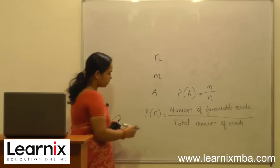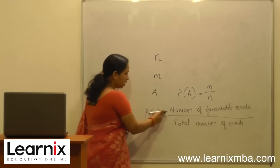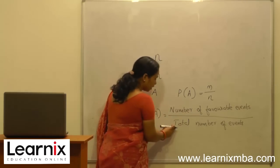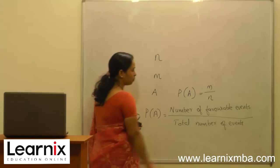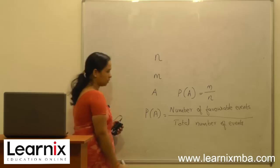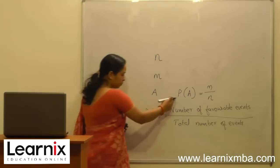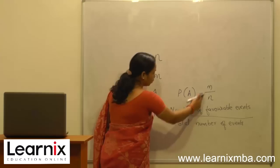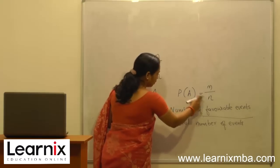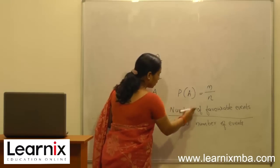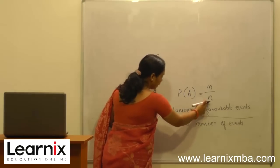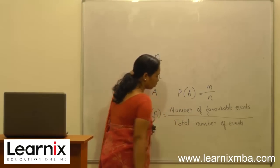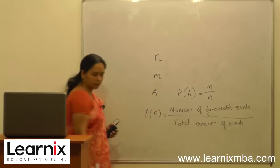Probability of A is defined as the number of favorable events divided by the total number of events. In simple terms, P of A is equal to m by n, where m is the number of favorable events and n is the total number of events or total number of cases.